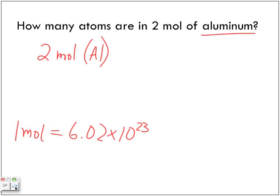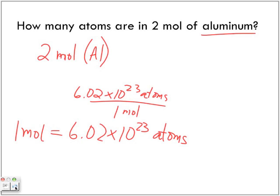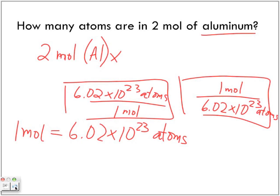We can rewrite this as 6.02 × 10²³ atoms per one mole, or one mole equals 6.02 × 10²³ atoms. They're the same, just inverted. Which one can I use that will cancel out moles? Where should moles be placed, top or bottom, to cancel out?